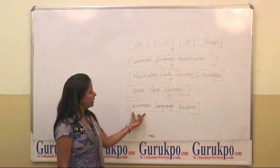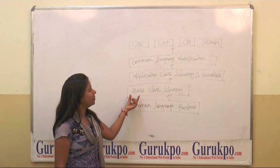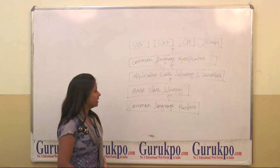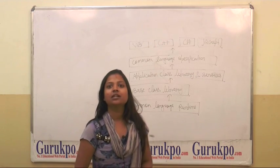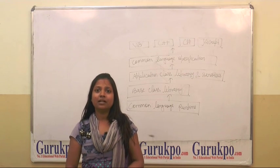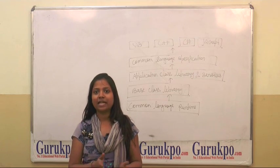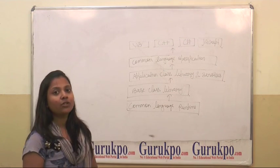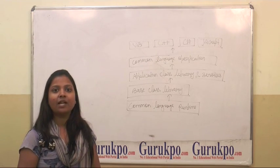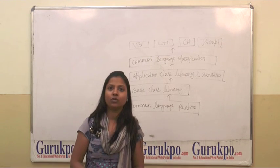First it is designed in common language runtime, then base class library and application class library, and then common language specification. The common language runtime is a runtime environment provided by the .NET Framework, which allows different languages to run simultaneously. The languages that play a role in window applications are JavaScript and C++, and mainly in web applications, VB and C Sharp play the main role.